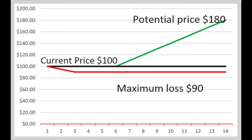This is a positive asymmetrical risk-reward situation. You can lose a maximum of $10 if you invest in a stock priced at $100, but the potential upside is $180. So the potential win is $80 and the loss is $10.